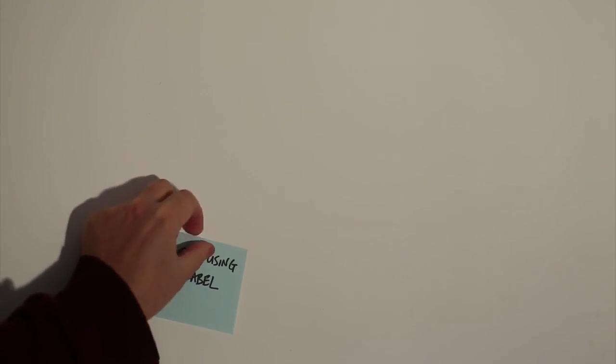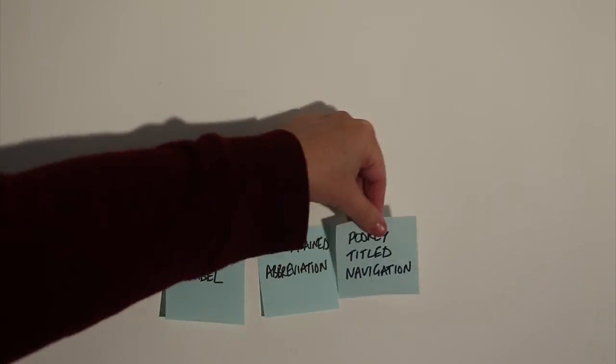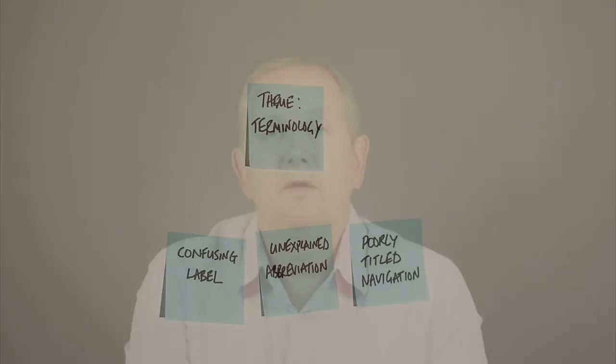Tip number three: focus on the top five issues. Chances are you spotted dozens of usability problems, but in a video you can't show them all. Instead, look over the issues and identify five common themes. For example, you might have spotted one usability problem to do with a confusing label on a form, another to do with an abbreviation that baffled users, and a third to do with poorly titled navigation. You could summarise these as a single issue like 'terminology' and then select the best clips to demonstrate it.